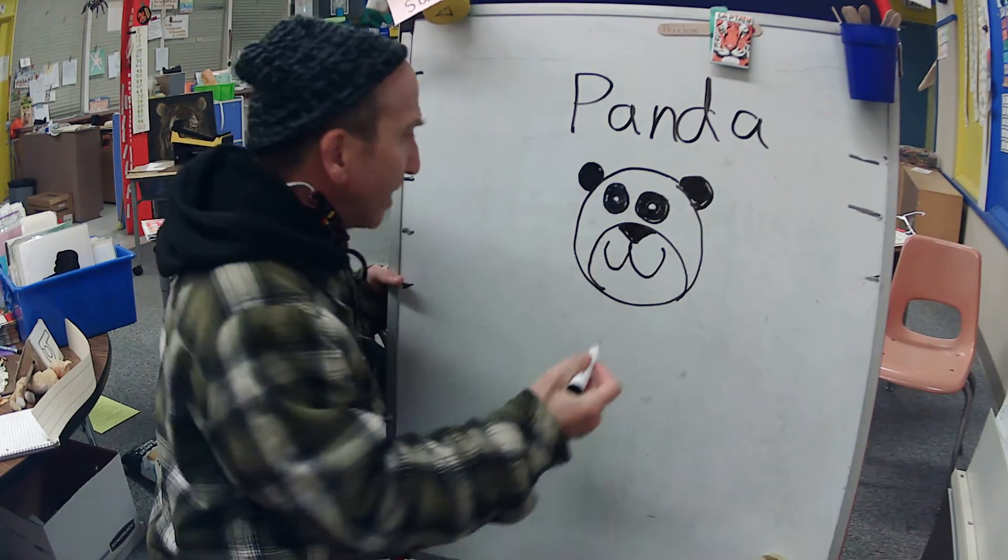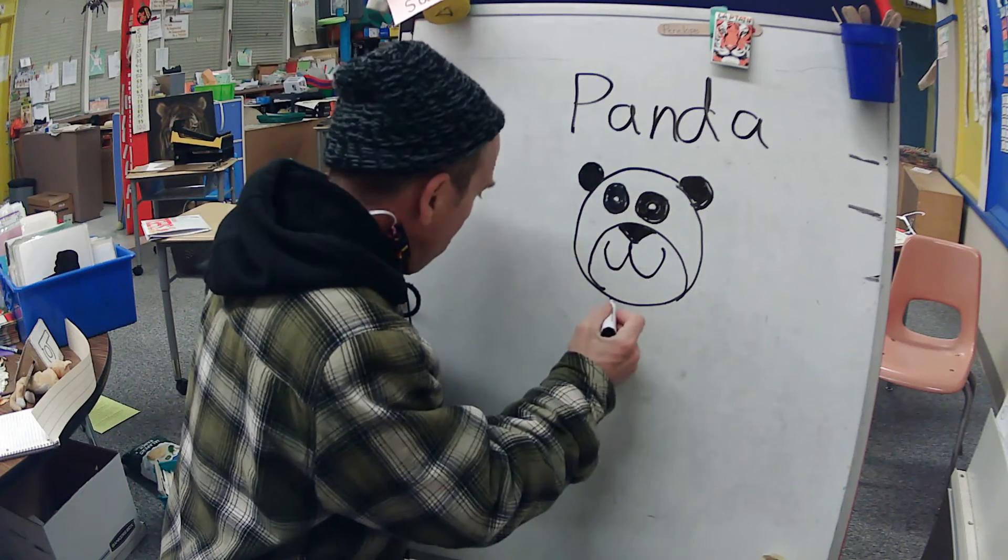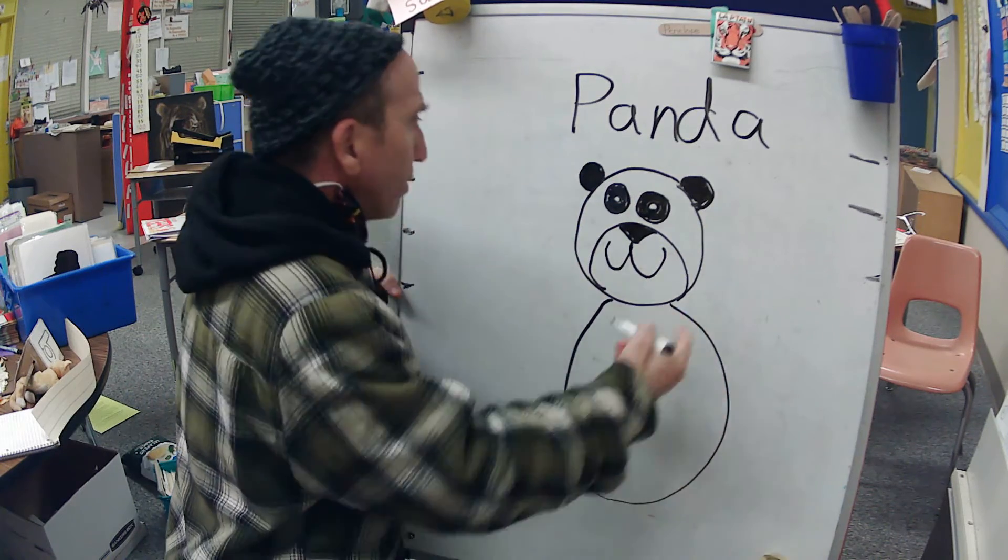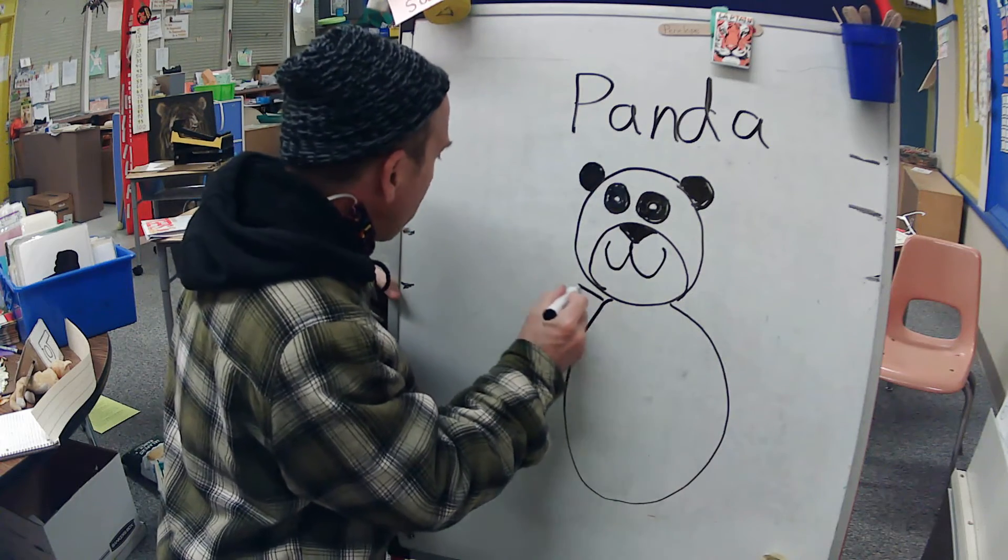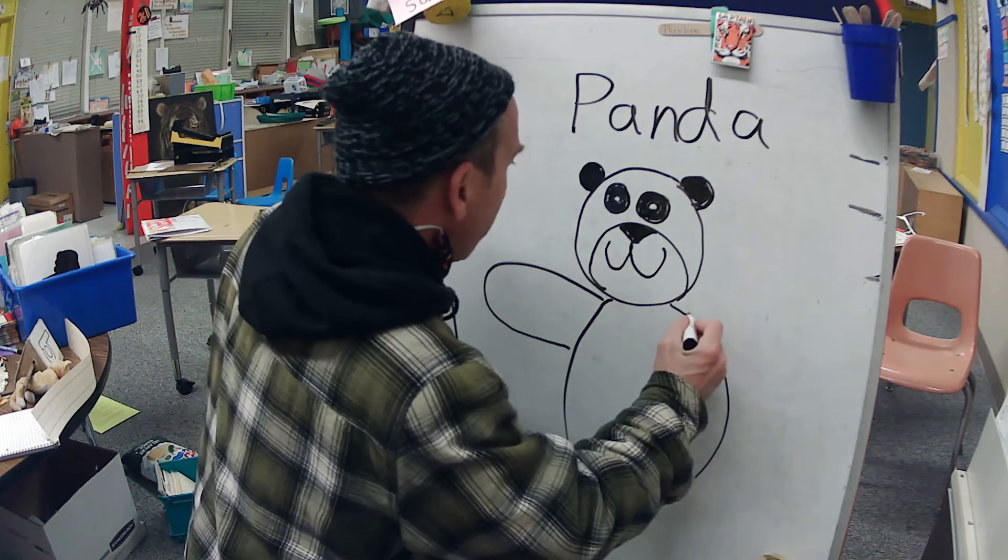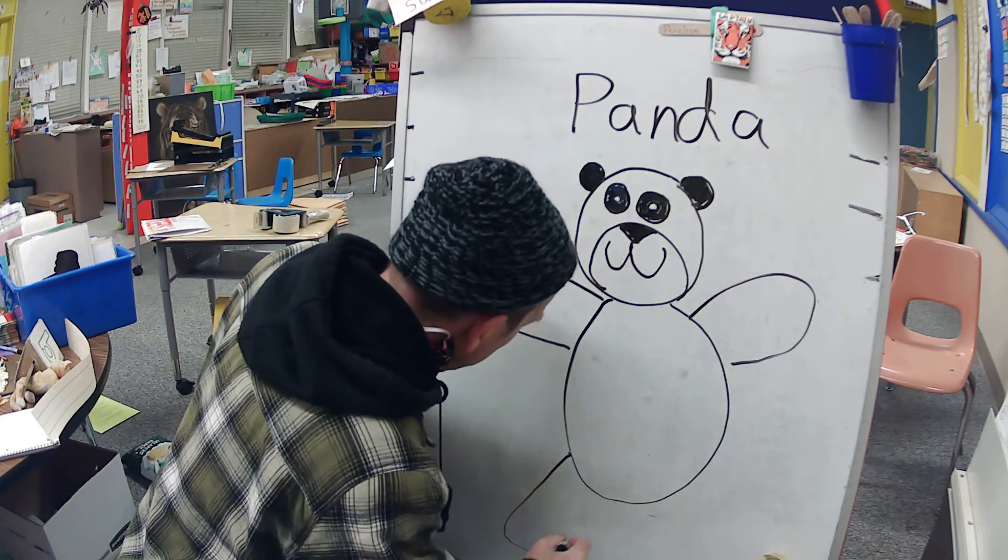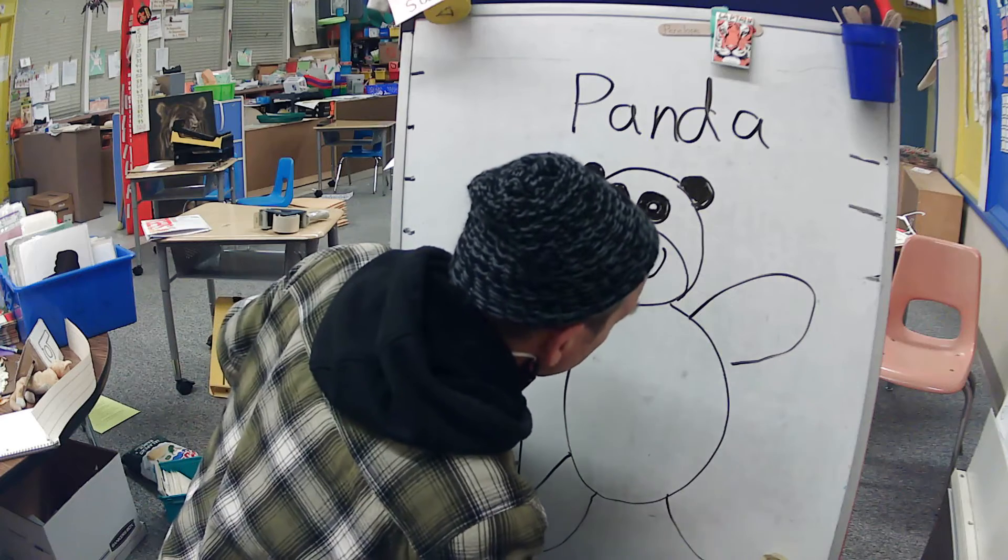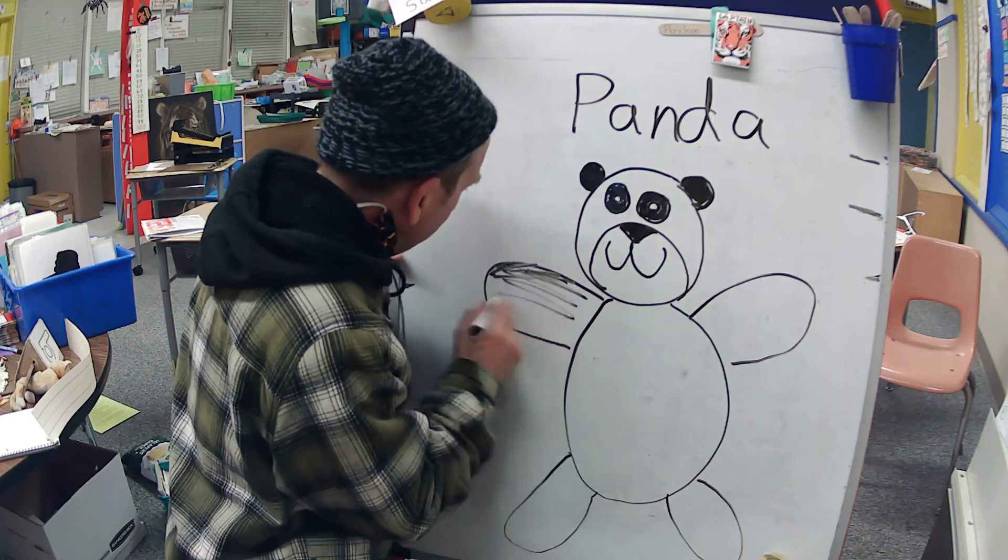Like this, because it's really easy. Now pandas are very distinctive because they are black and white. You can make it kind of like the number eight. Yeah, and you probably already know this: pandas have black arms and black legs. And pandas are awesome!